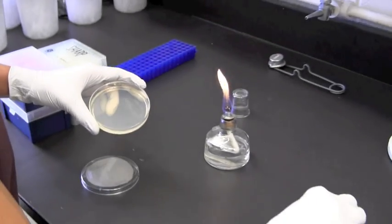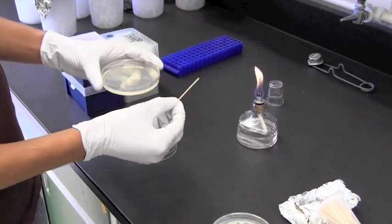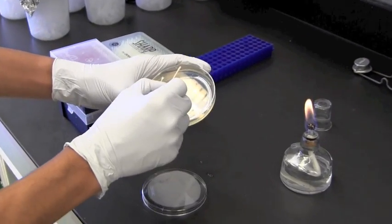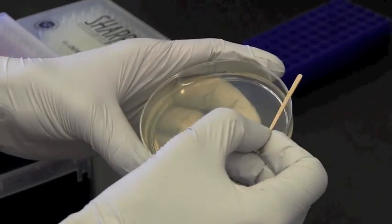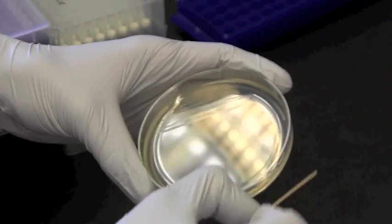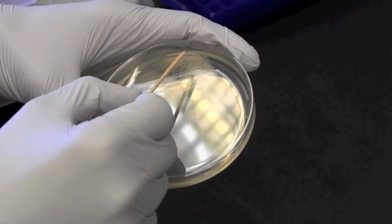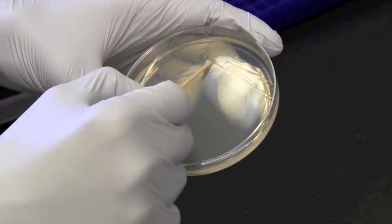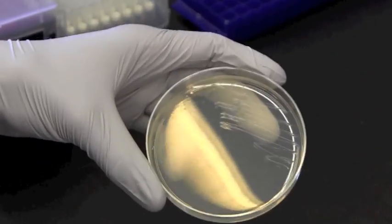Now we're going to do a second streak which is going to be slightly less concentrated than the first one. To do this we're going to overlap over part of our first streak to pick up some cells and continue to zigzag it onto another clean area of the plate. And that's our second streak.